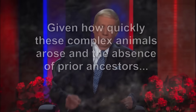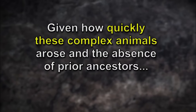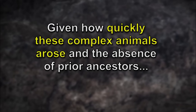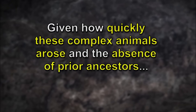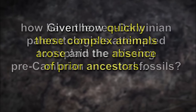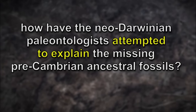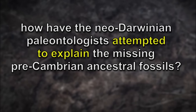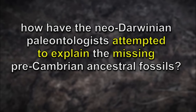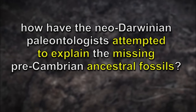Given how quickly these complex animals arose and the absence of prior ancestors, how have the Neo-Darwinian paleontologists attempted to explain the missing Precambrian ancestral fossils?